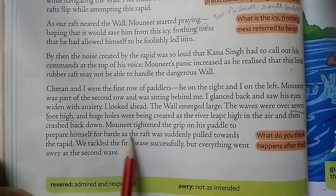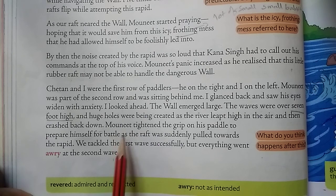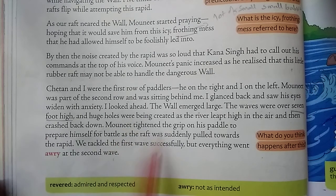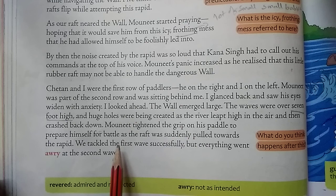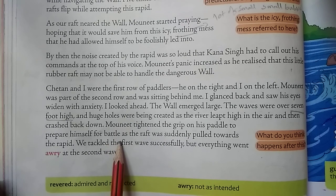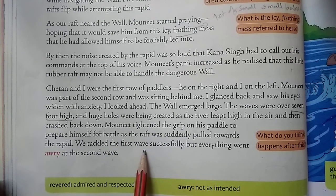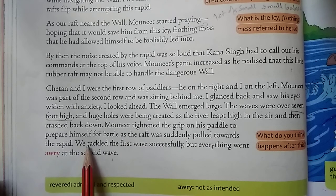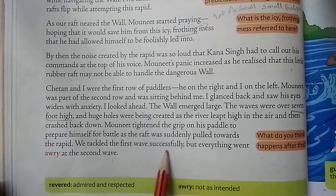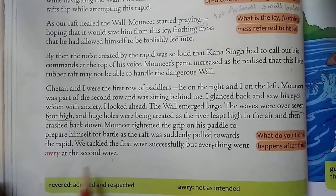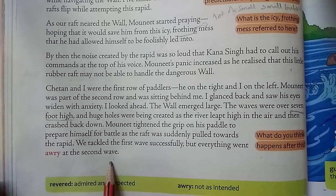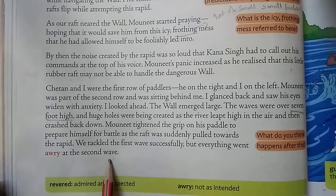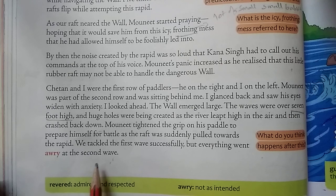Maunit was very frightened and held his paddle very tightly, as if preparing for battle. He was suddenly pulled towards the rapid. They tackled the first wave successfully and crossed it, but at the second wave, everything went out of control.